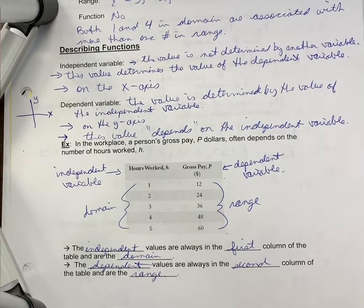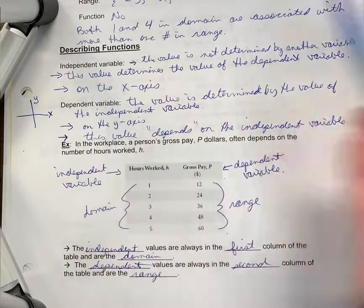Describing functions. When we're describing functions, we look at the two variables involved: an independent variable and a dependent variable.